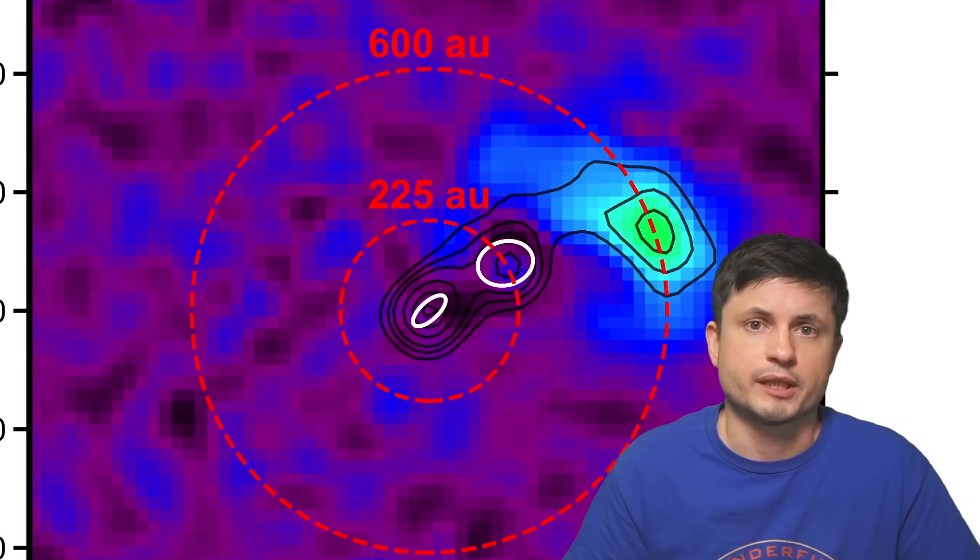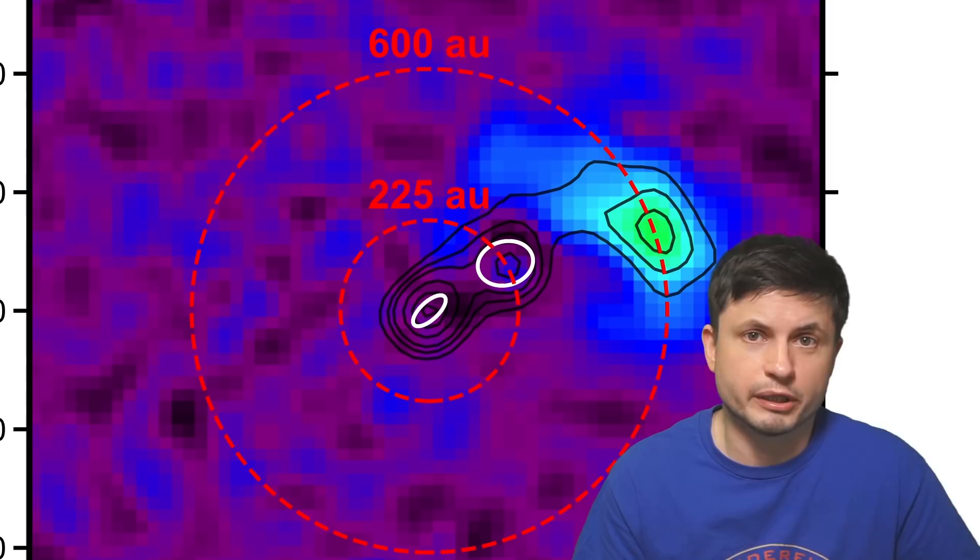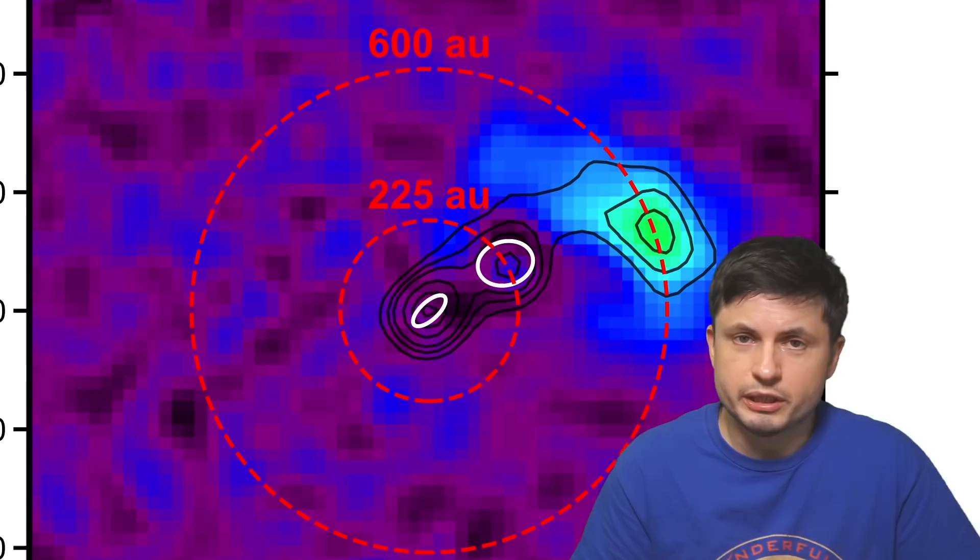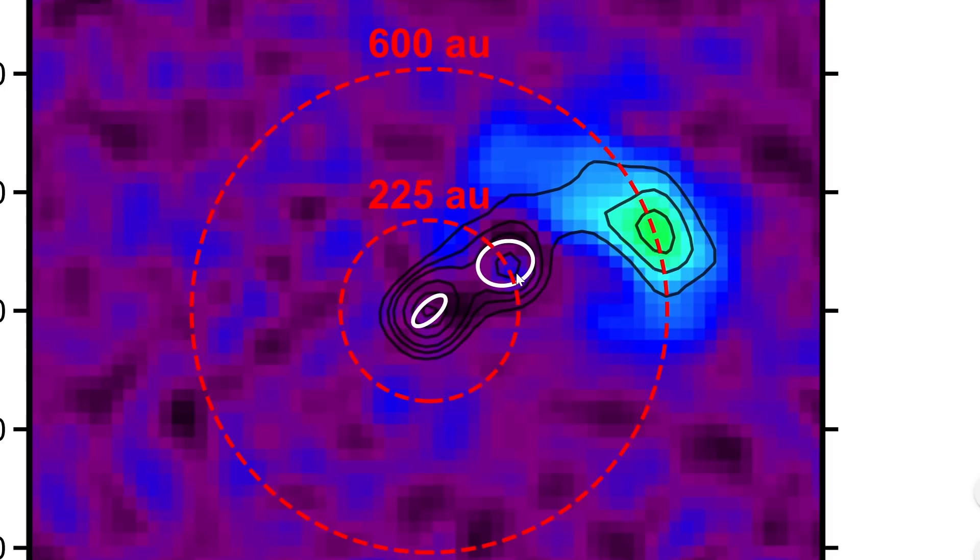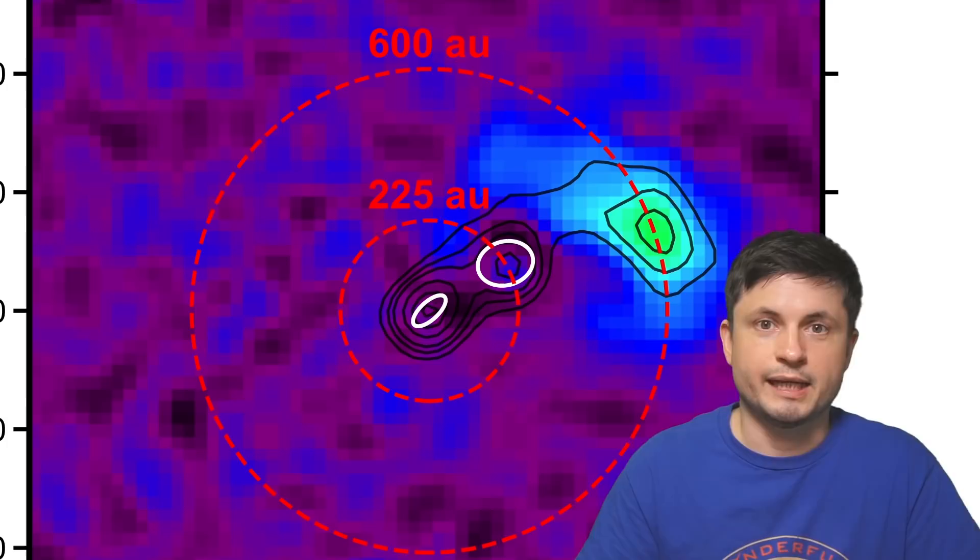But now, two decades later, the scientists behind the study, whose paper you can find in the description, discovered something else. Another partner, or another star, located relatively far away from the original binary. In other words, this was not a binary star at all. It was actually a trinary star, with a really massive object orbiting on the outskirts. The object located right here, around 225 astronomical units away from the center. And it sort of makes sense that it took so long to find this.